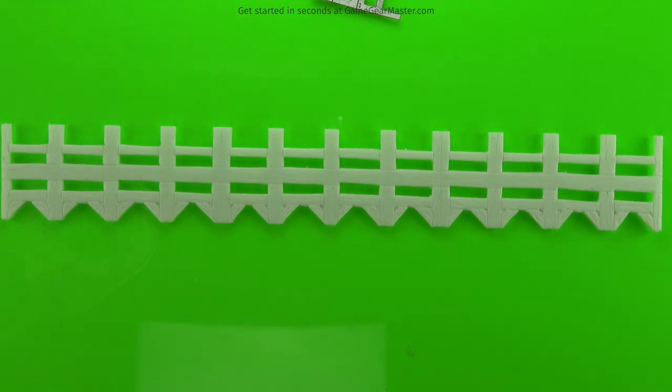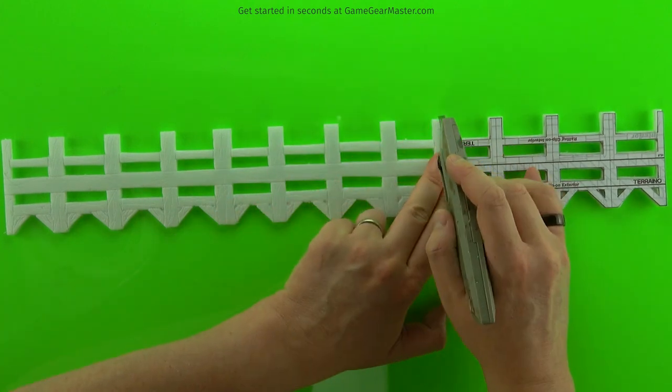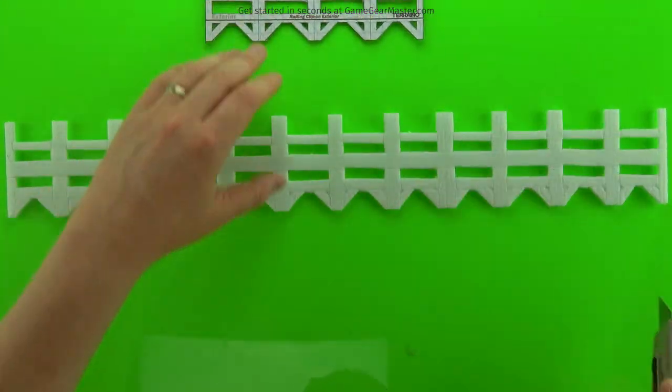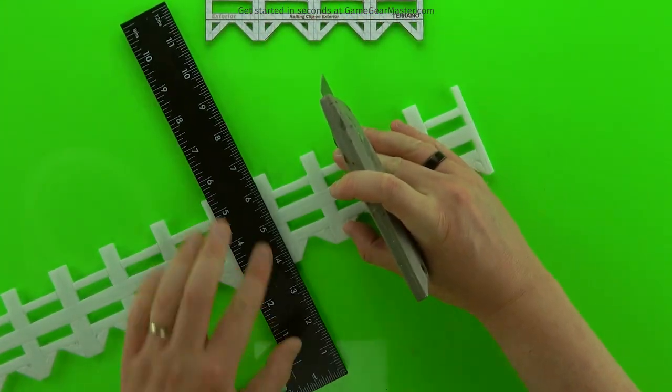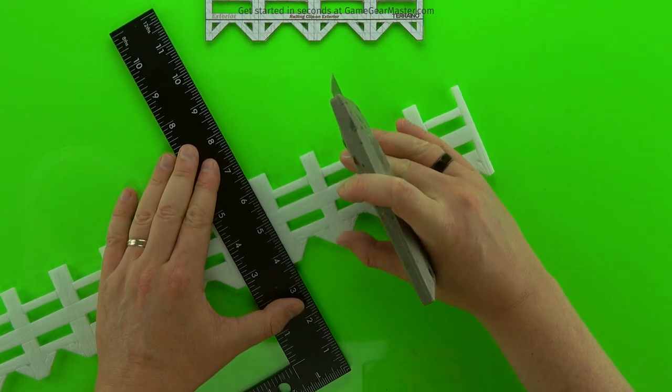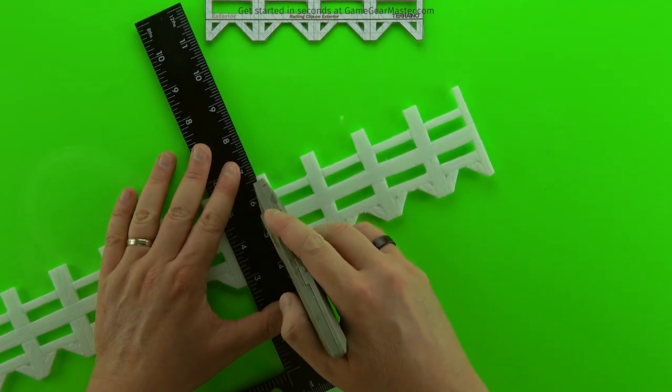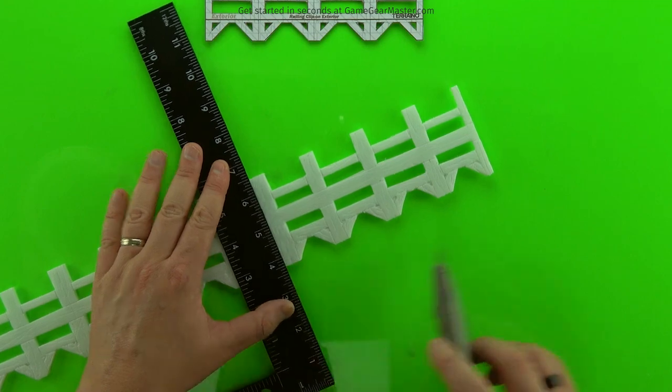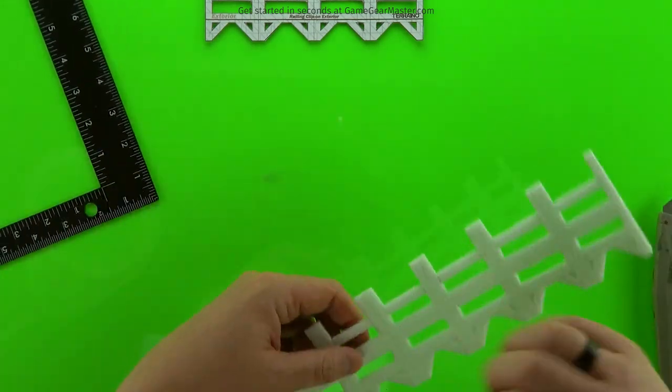And then it's time to cut out the individual components. So first we're going to cut out the railings themselves. So here I'm going to cut out a four square wide railing. So we'll have that as all the components for that one four square wide railing.